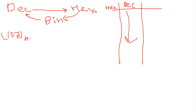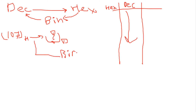We'll see the reverse conversion first — that is hex to binary and then binary to decimal. Say that I have 107h and I want to convert it to the decimal system. First I will convert it to binary, and then convert that to decimal. To convert a hex number to binary, we represent each hex digit by its equivalent 4-bit binary number.